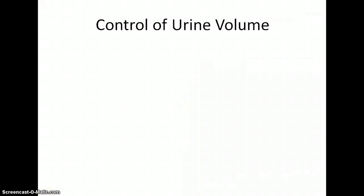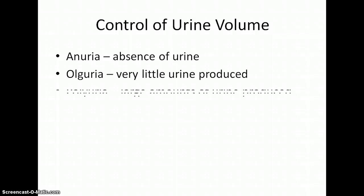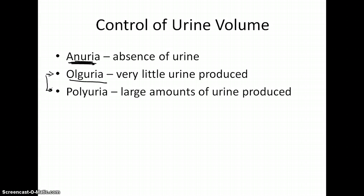Because of this, we can get different amounts of urine. Some vocabulary to know: anuria is the absence of urine production — a sign of kidney failure. Oliguria is very little urine produced, perhaps when we're dehydrated. And polyuria — excessive urination — is often a sign of diabetes.